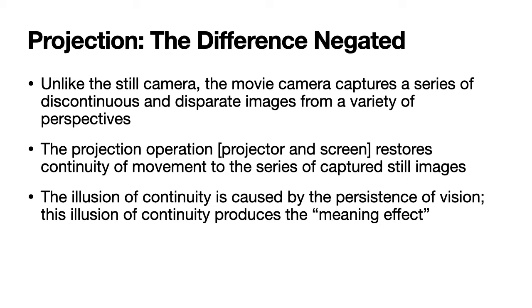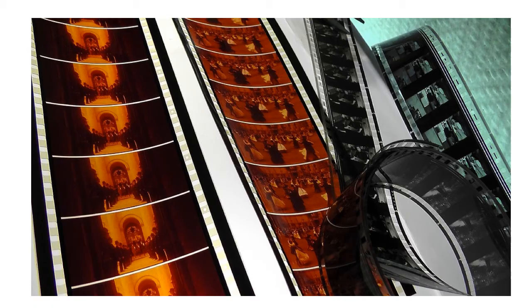Persistence of vision is a particular quality of our vision where even after an image is physically removed from our sight, the image remains in our vision for a fraction of a second. It is this persistence of vision that is being used to create an illusion of continuity. This is just a simple example — this is an image of a film reel, a couple of film reels.